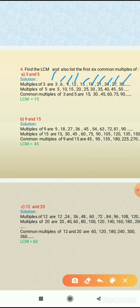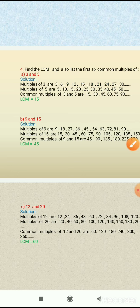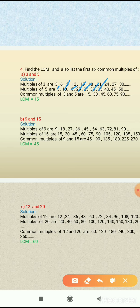Next we find the multiples of 5: 5, 10, 15, 20, 25, 30, 35, 40, 45, and 50. In this way, here we get the multiples of 3 and multiples of 5.